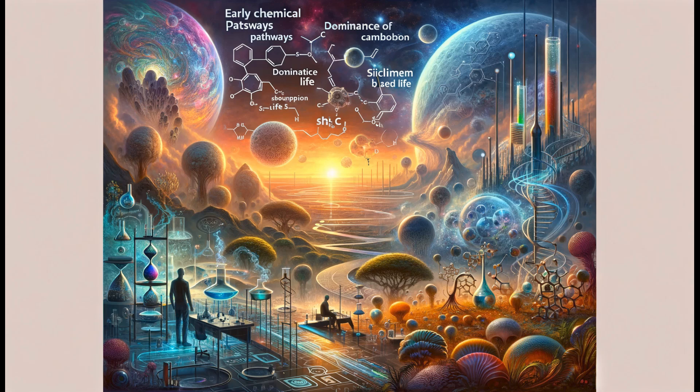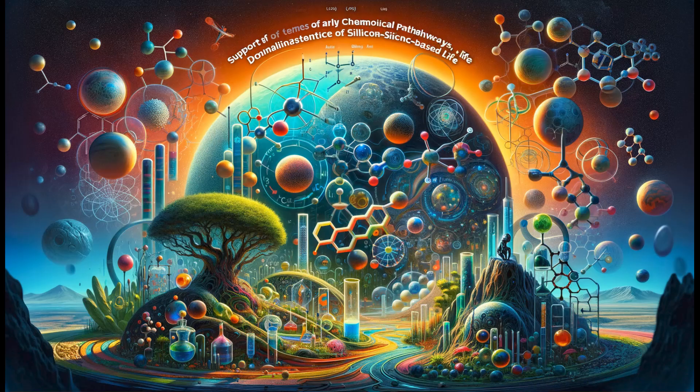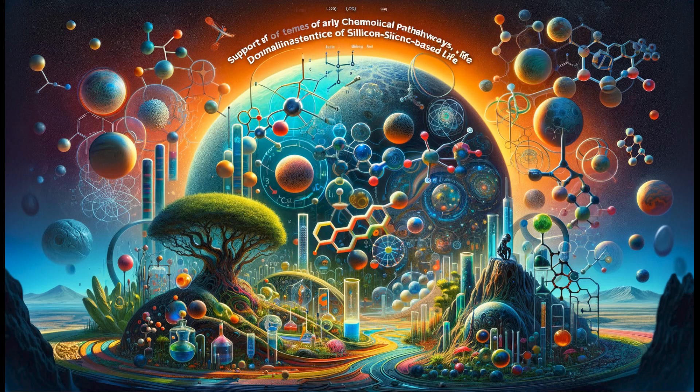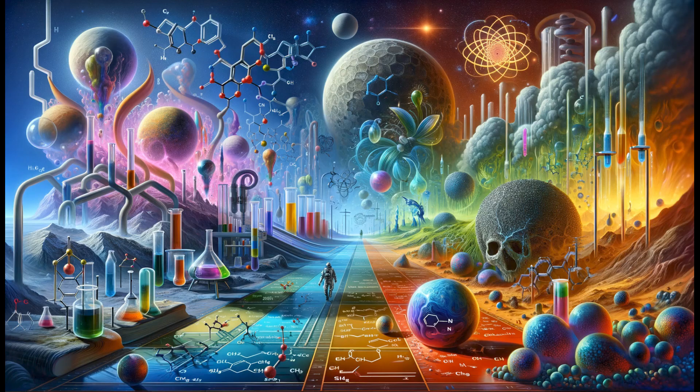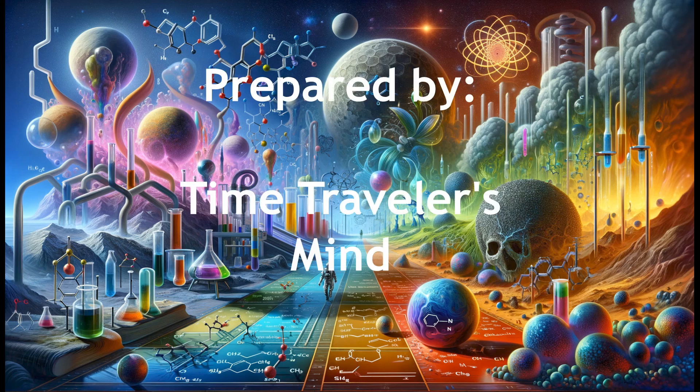As a result, while the idea of silicon-based life forms is a fascinating theoretical brainstorm and a popular motif in science fiction, current understanding in chemistry and physics suggests that silicon is unlikely to support life forms in a way similar to carbon. However, exploring this possibility enriches our understanding of the potential variability and adaptability of life by highlighting the unique conditions that gave rise to carbon-based life as we know it today.